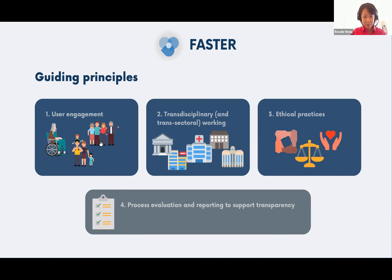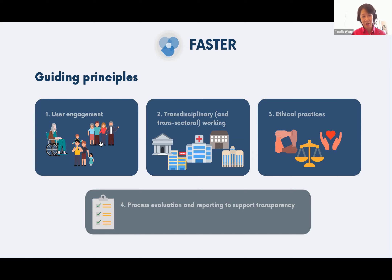We have laid out four guiding principles. Three — user engagement, transdisciplinary and transsectoral working, and ethical practices — are conceptualized to be at the core of the three FASTER phases. The fourth, process evaluation and reporting, supports transparency and occurs outside all phases; it evaluates how well our processes are at achieving the outcomes we want at every stage. Transparency is critical to demonstrate how we arrived at our development and evaluation decisions. The paper details key points for each guiding principle and refers readers to further resources.